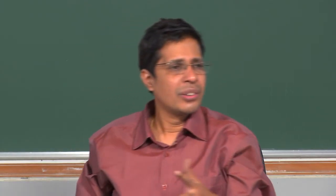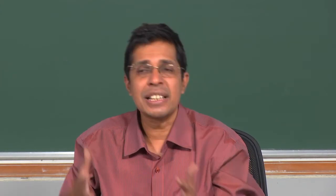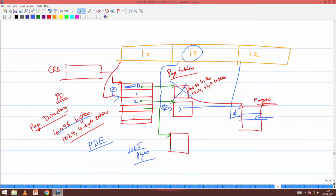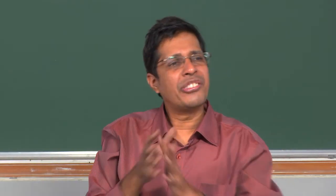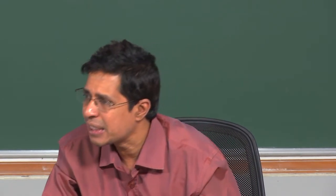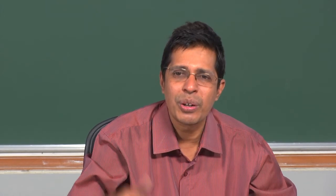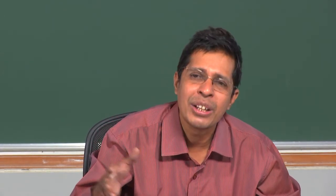The size of the page table is directly proportional to the amount of memory you are actually utilizing. If you are not utilizing some memory, the corresponding page tables can be thrown off. This means multi-level paging gives us a dynamically growing and shrinking page translation mechanism - an on-demand page table. Just as we talked about on-demand paging in the morning, now we have an on-demand page table.